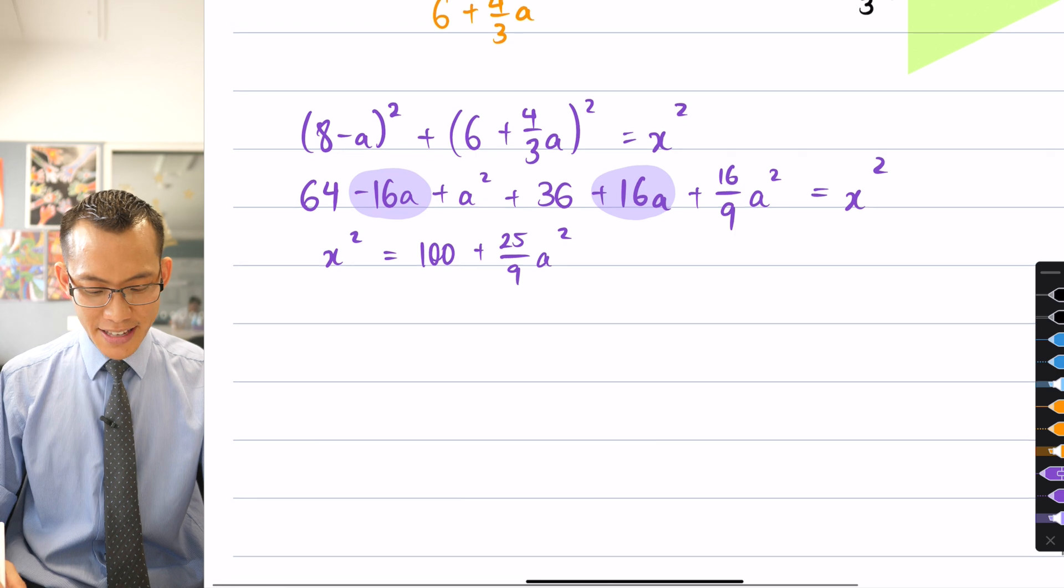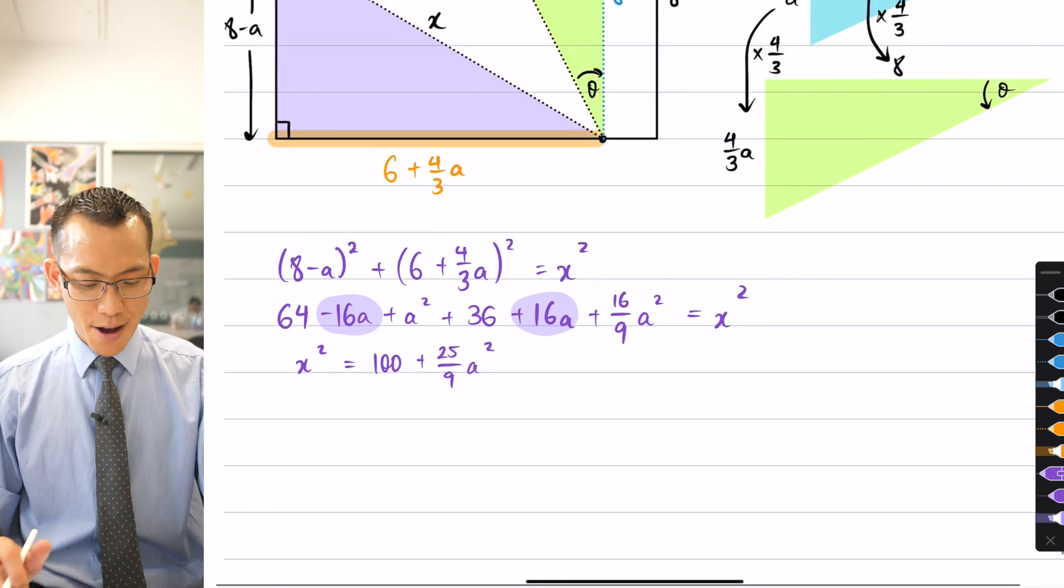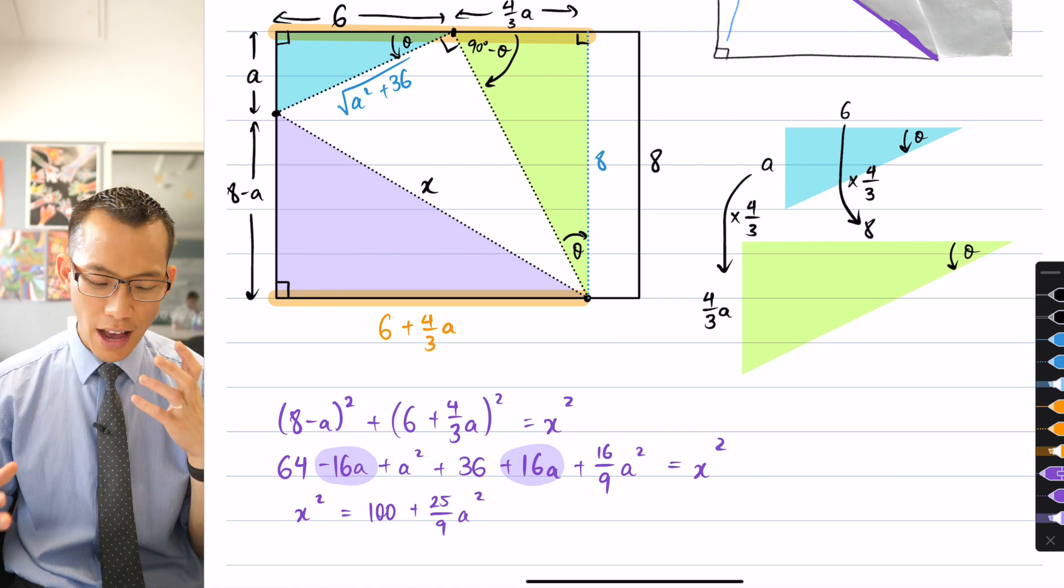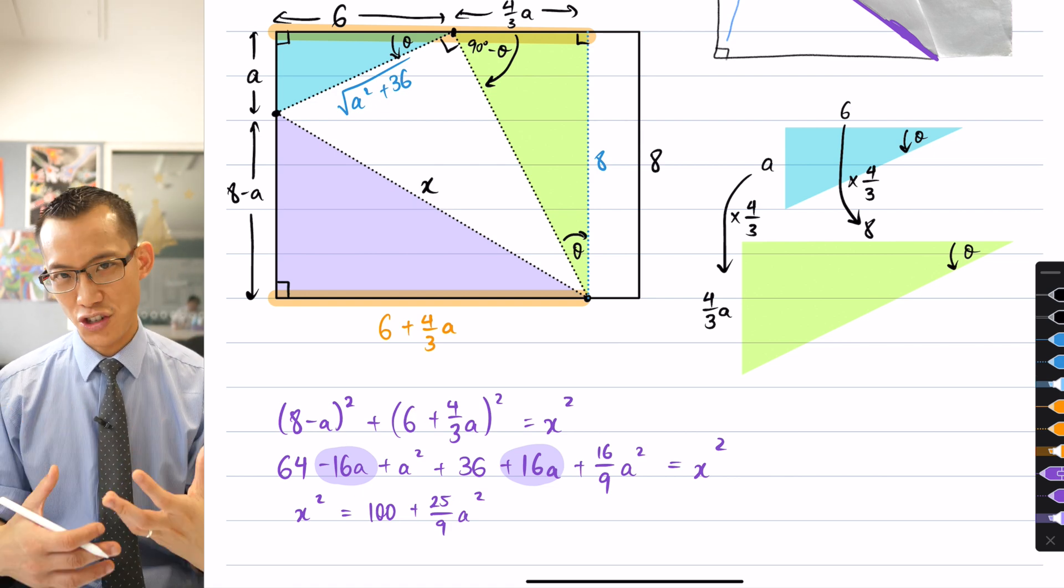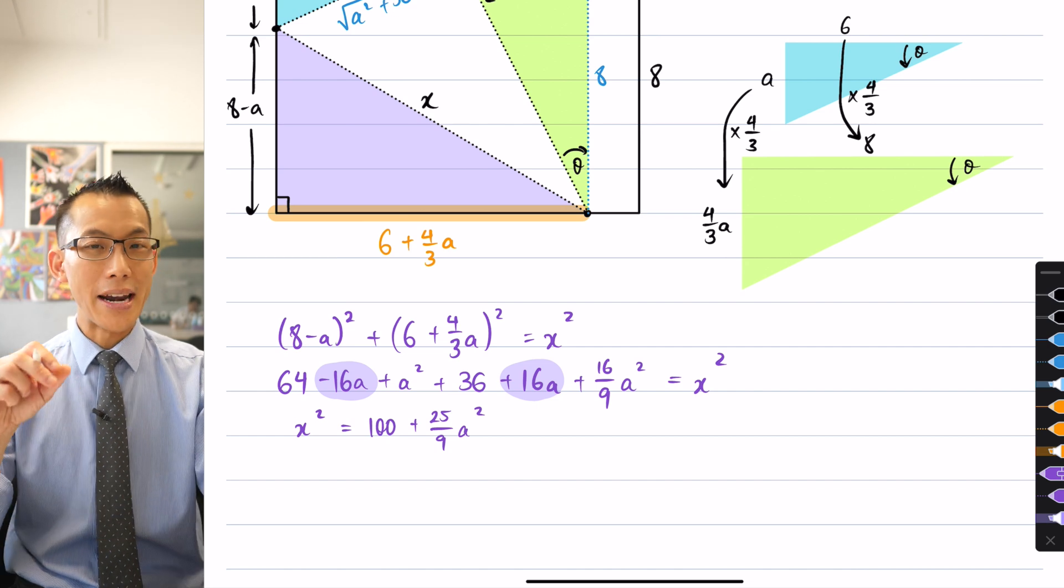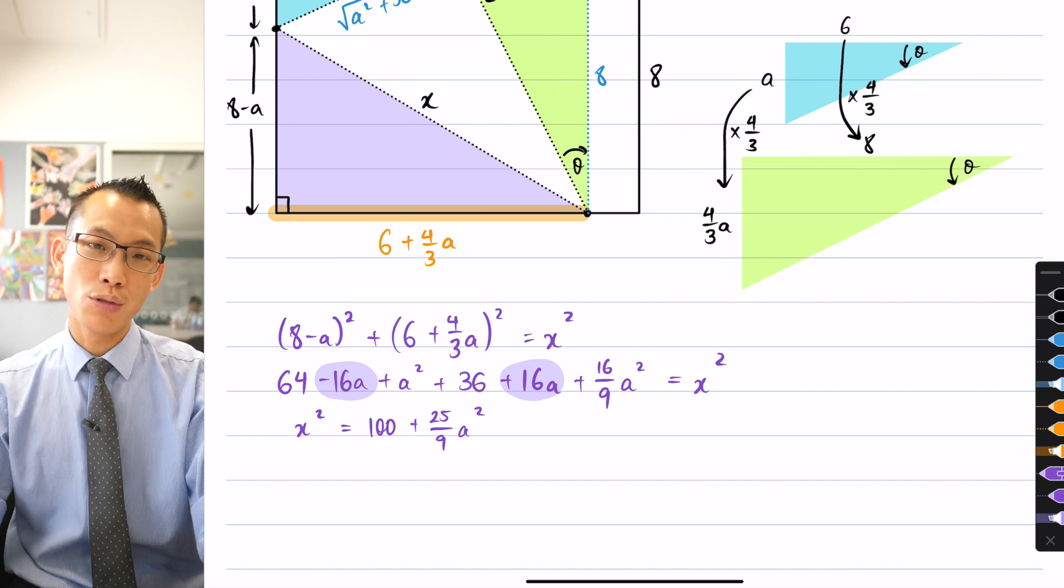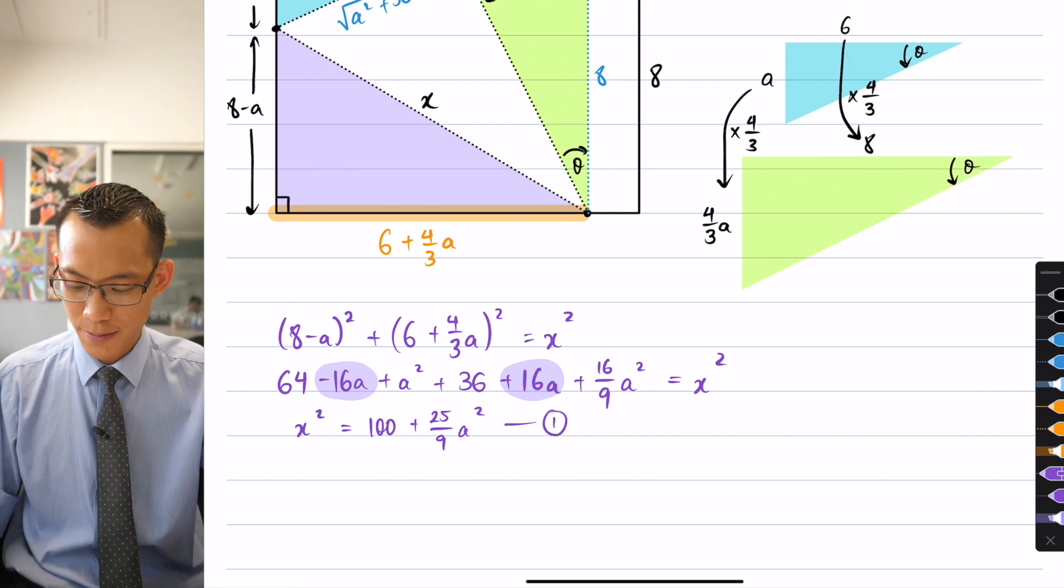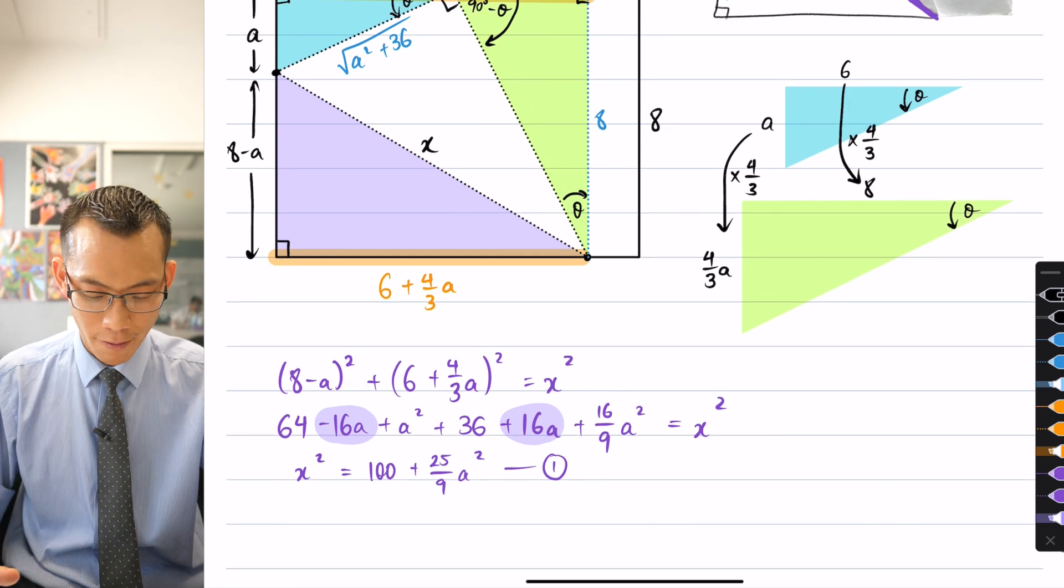So this is nice, but like I said before, it's not enough. X squared is in terms of A, but what is A? There's got to be something else that I can do with A, some other relationship in this diagram that can help me solve what A itself is. And then I'll use that to substitute into, I know we're going to substitute back into this equation, so let's just give it a name. It's called equation 1.